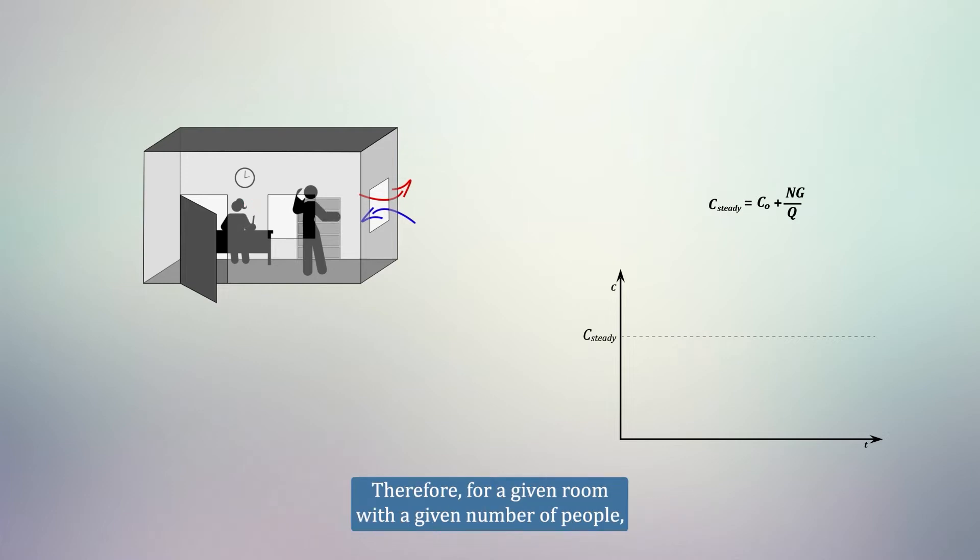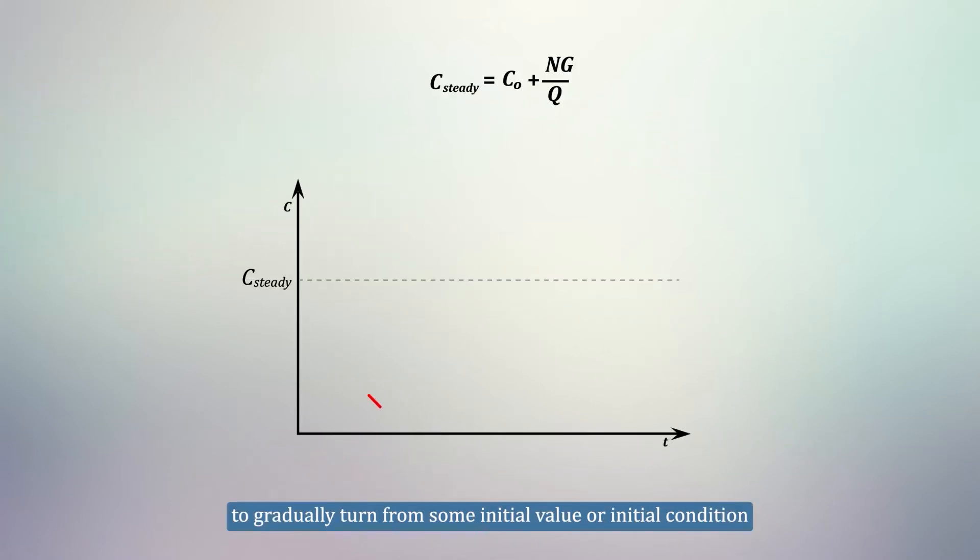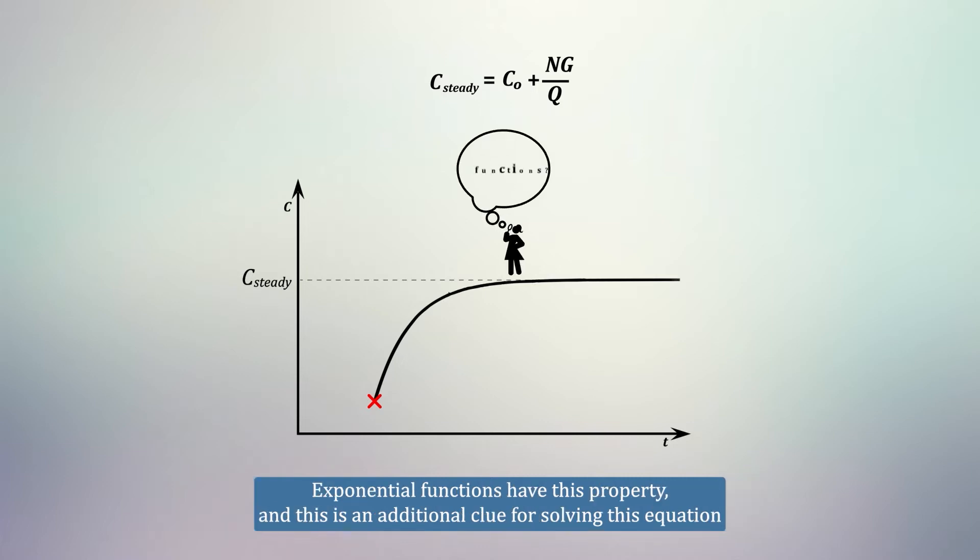Therefore, for a given room with a given number of people, if the ventilation rate stays constant, we would expect the CO2 level to gradually tend from some initial value, or initial condition, towards the steady value, and will then remain at the steady value. Do we know a common function that has this characteristic of tending towards, and then remaining at a constant value? Exponential functions have this property, and this is an additional clue for solving this equation.